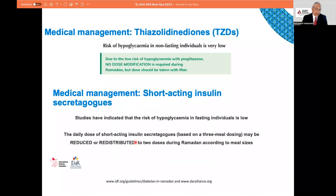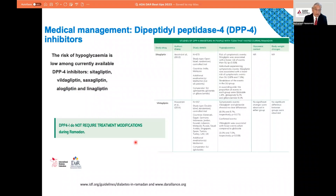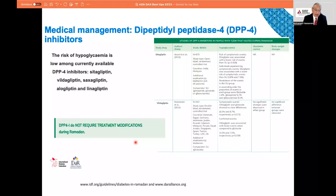Short-acting insulin secretagogues are not very frequently used, but because of their short-acting nature, studies show lower incidence of hypoglycemia compared to other sulfonylureas, and doses can be adjusted to meal size. DPP-4 inhibitors have been studied specifically — sitagliptin and vildagliptin — and these findings would generalize to other DPP-4 inhibitors. They do not frequently cause hypoglycemia, are good for postprandial glycemic control, and are weight neutral. If taken once daily, take with the main meal; if twice daily, take with the two Ramadan meals.